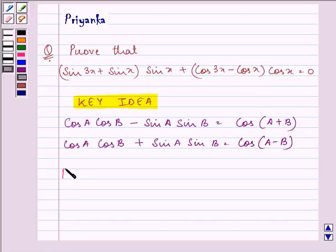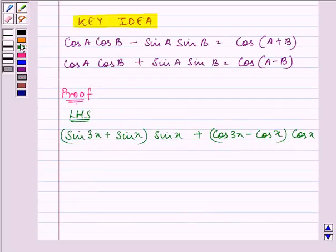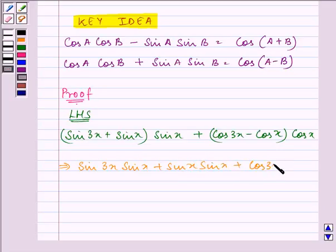Let us start with our proof. The left hand side given to us is sin 3x plus sin x both multiplied by sin x plus cos 3x minus cos x multiplied by cos x. Now, on multiplying sin x by sin 3x and then with sin x, we have sin 3x sin x plus sin x sin x plus cos 3x cos x minus cos x cos x.